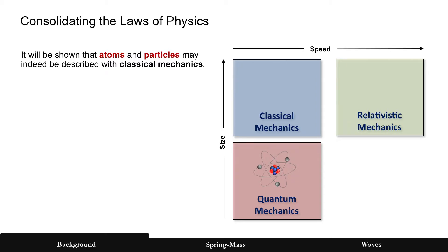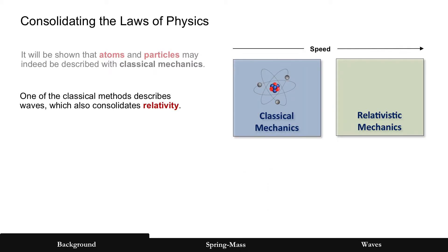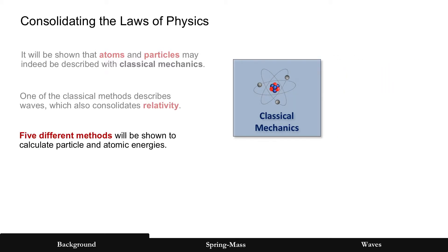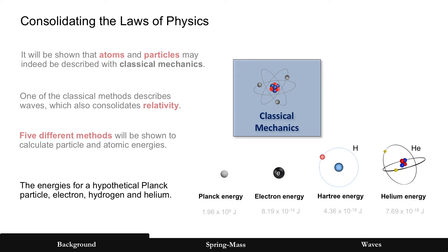Okay, so let's try to consolidate this and make some sense. It's going to be shown that atoms and particles can be described with classical mechanics. One of the methods here describes waves, which will be shown to consolidate relativity. And this might be overkill, but five different methods are going to be used to show particle and atom energies. Those particles are a hypothetical Planck particle, which generates the Planck energy, electron energy, and then hydrogen and helium. Beyond helium, there is a framework that's established and it can be used to calculate lithium and beyond. But for this video, we're going to stay at a high level. So these two particles, those two atoms.